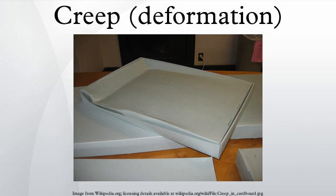Nabarro-Herring creep is a form of diffusion creep. In Nabarro-Herring creep, atoms diffuse through the lattice causing grains to elongate along the stress axis. K is related to the diffusion coefficient of atoms through the lattice, Q equals Q self-diffusion, m equals 1, and b equals 2. Therefore, Nabarro-Herring creep has a weak stress dependence and a moderate grain size dependence, with the creep rate decreasing as grain size increases. Nabarro-Herring creep is strongly temperature dependent.